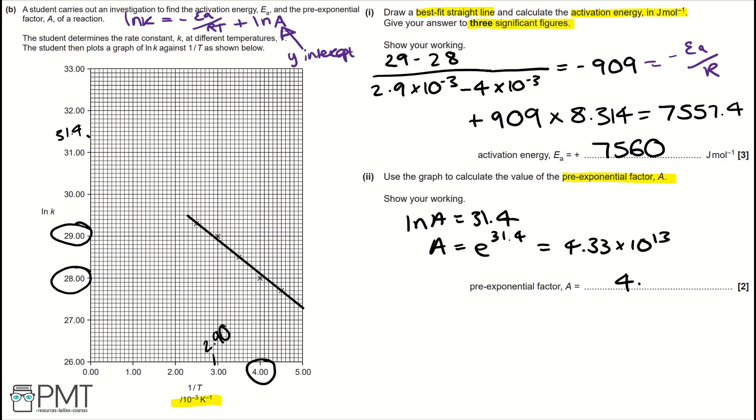To get the two marks for this question, you get your first mark for working out ln A is 31.4, or working out the y-intercept, and then your second mark for working out that A is e to the power of your y-intercept, and working out that value.